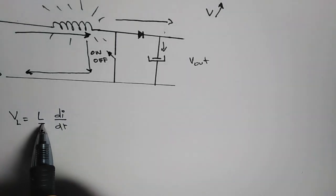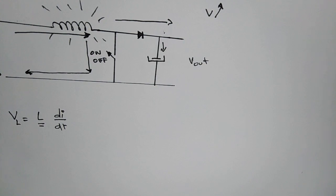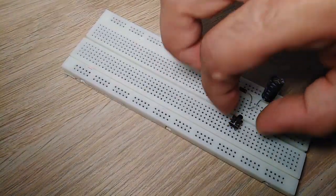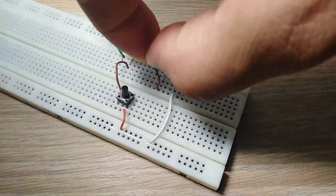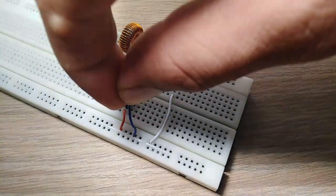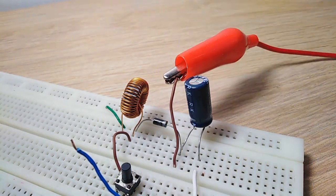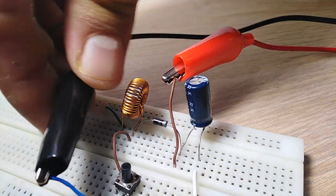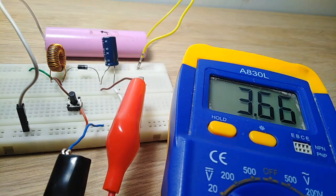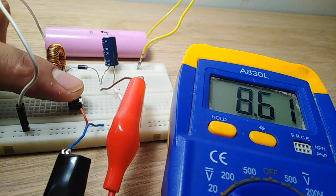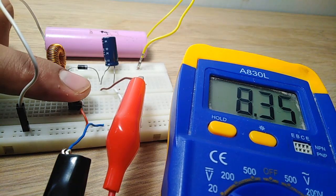This is the circuit on the breadboard. I connect the coil, the diode, the capacitor, the push button, and the multimeter to check the voltage. Any time I press the button, the coil stores the energy and pumps it to the capacitor. As you can see, the voltage rises.